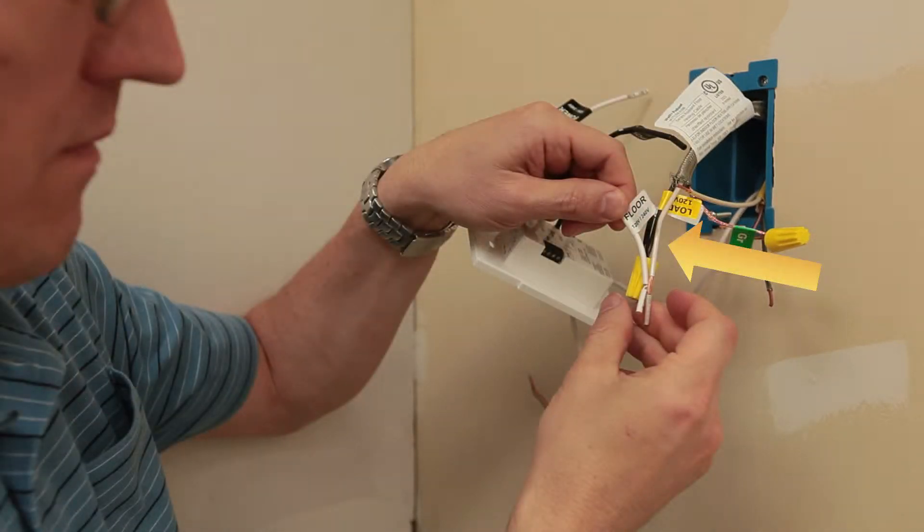The white or blue wire from the warm wire leads are then attached to the white load wire from the SunStat.